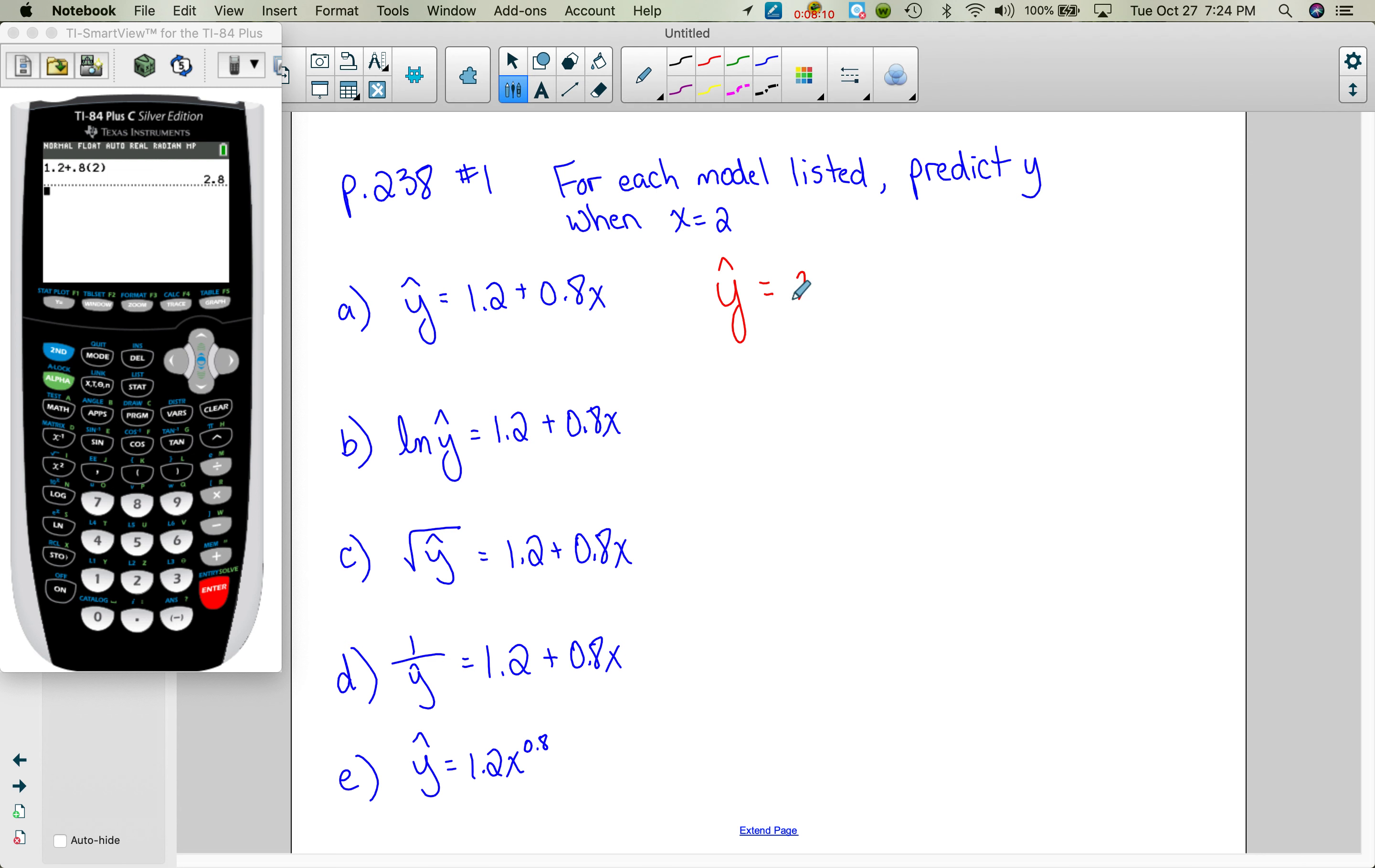So for part B, and notice when I plug in the two, I still have 2.8 for each time. Well, not the last one. So I'm going to get ln y hat equals 2.8. But I need to undo natural log. To undo natural log, you exponentiate with the base of E. And then I undo the natural log so I get y hat. So I'm going to have to do E raised to the 2.8 power, and I get 16.445.